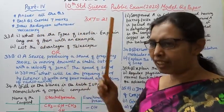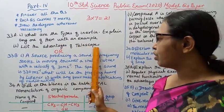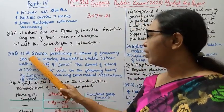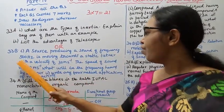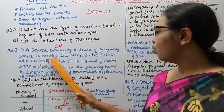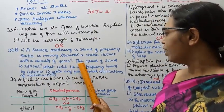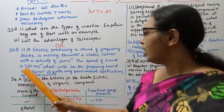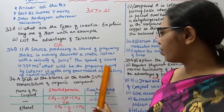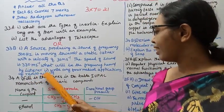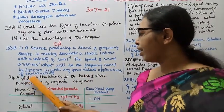Draw the diagram wherever necessary. Second part of 33A: List the advantages of telescopes. Question 33B, first subdivision: A source producing a sound of frequency 500 Hz is moving towards a static listener with a velocity of 30 meters per second. The speed of sound is 330 meters per second. What will be the frequency heard by the listener? Second: Write any four medical applications of radioactivity.